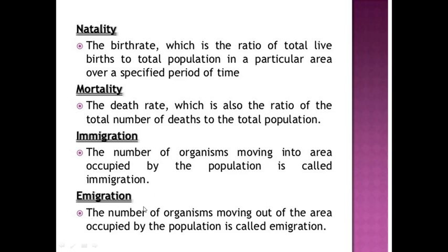Emigration is the number of organisms moving out of the area occupied by the population. If organisms move from an area where the population lives to somewhere else, that is emigration. Emigration always reduces the size of the population — that is, population density. These four — natality, mortality, immigration, and emigration — are the four important factors affecting population size.